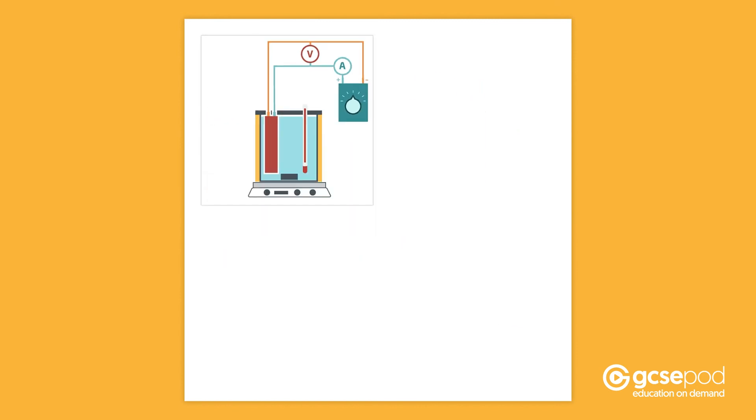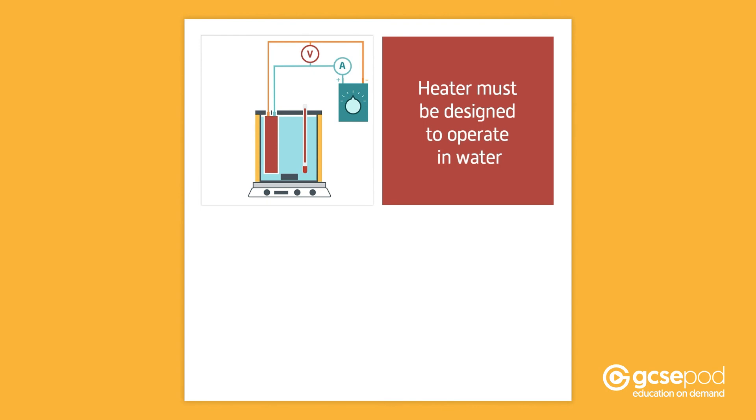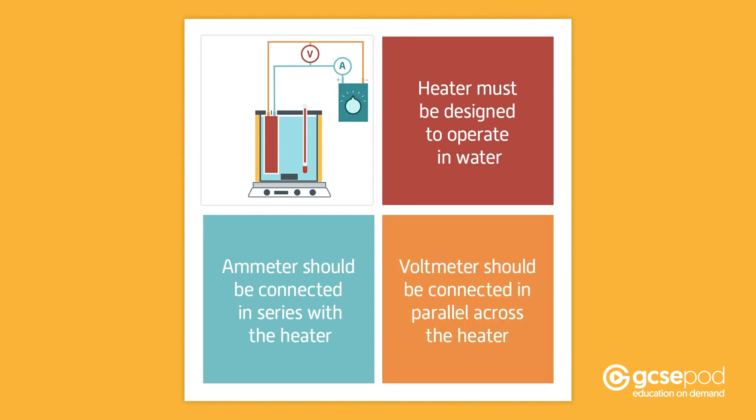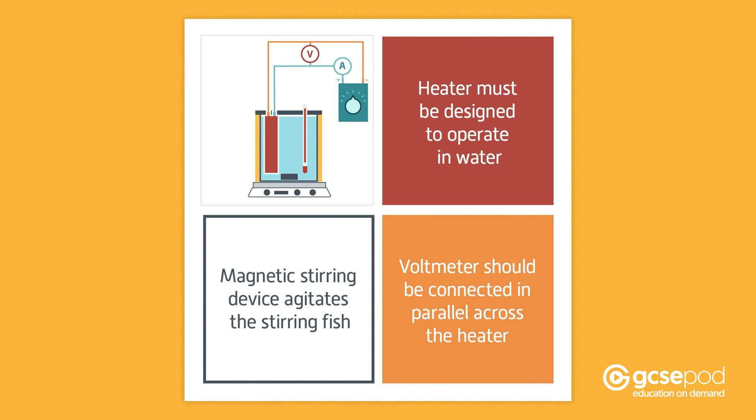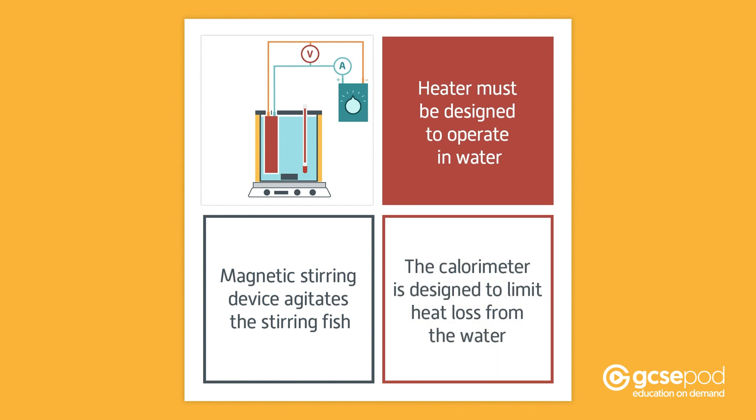There are a few things to note. The heater has to be waterproof and designed to operate submersed in water. The ammeter should be connected in series with the heater and the voltmeter connected in parallel across the heater. The magnetic stirring device agitates the stirring fish to make sure the water is adequately distributed during the heating process. The calorimeter is specially designed to limit heat loss from the water.